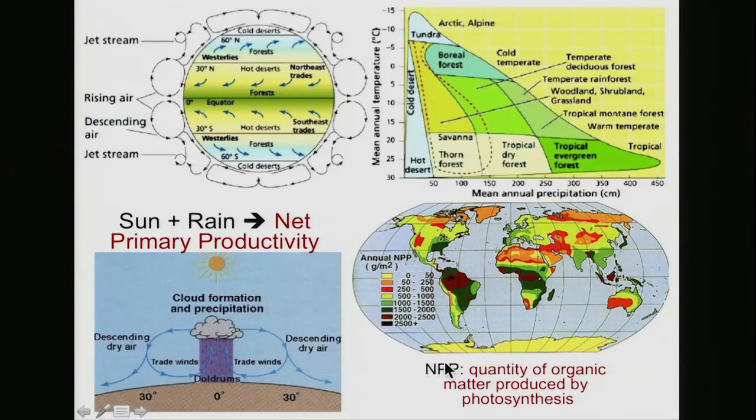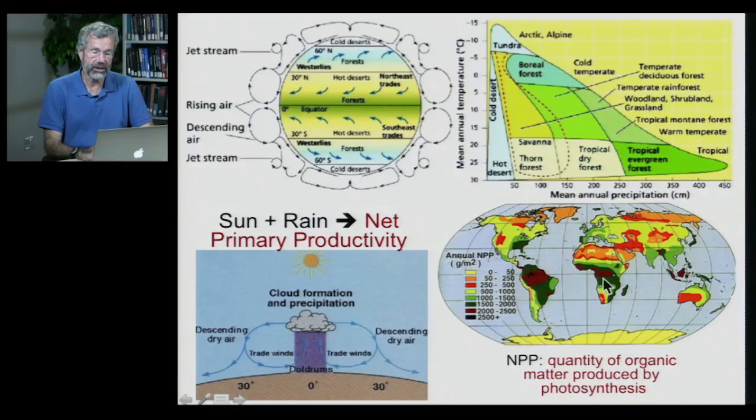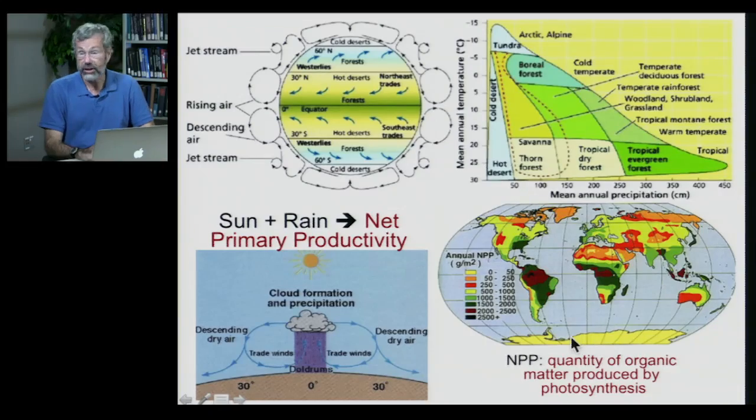If we look at the distribution of net primary productivity, which is abbreviated as NPP, that's the quantity of organic matter produced by photosynthesis, that's simply just plant biomass. And this is most abundant at the equator and as you move north, you're less and less. And also when you go into the deserts like in the Sahara or the Antarctica, which is another desert, there's very little biomass.